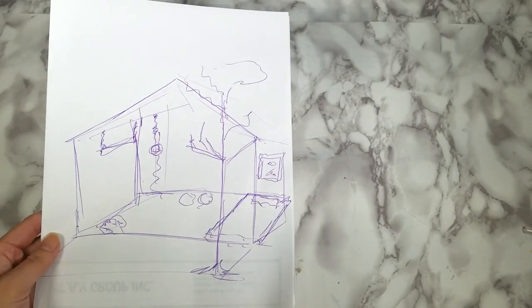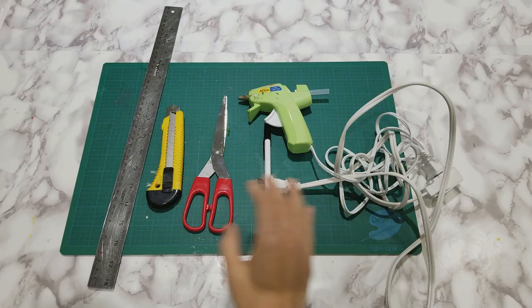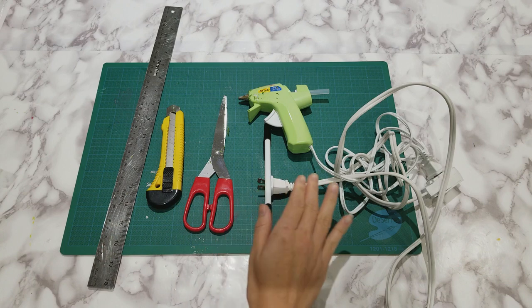For tools we need cutting board, ruler, utility knife, scissors and hot glue gun.